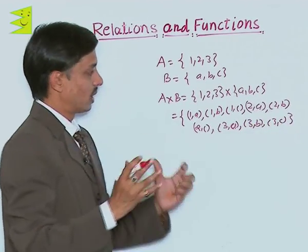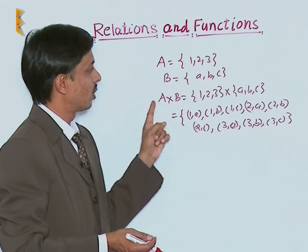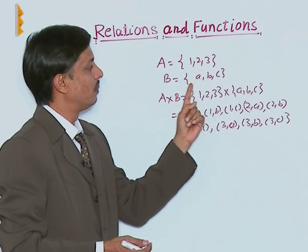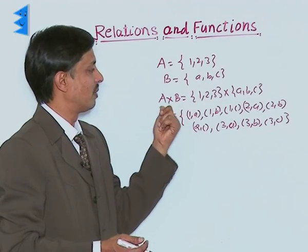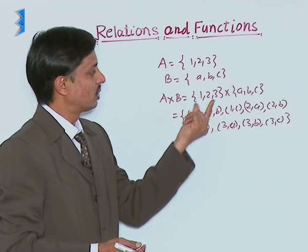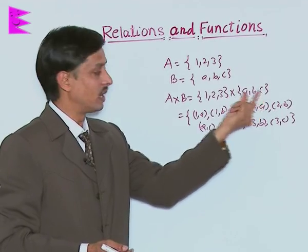So what I am going to explain to you is that Cartesian product of A and B, if A is having the elements 1, 2, 3 and B is having the elements A, B, C, is given by A cross B equals 1, 2, 3 cross A, B, C. There are three elements in set A, there are three elements in set B.